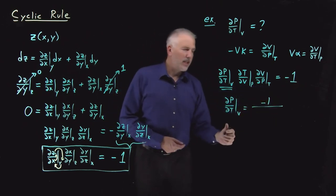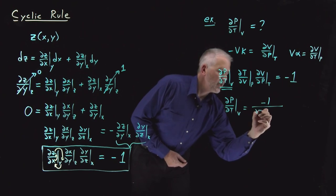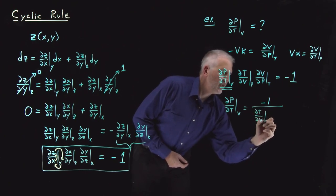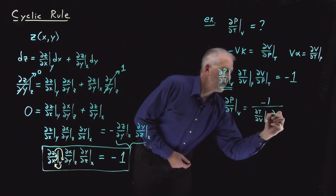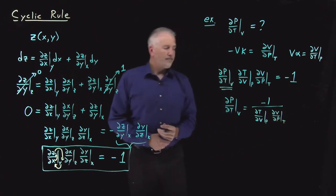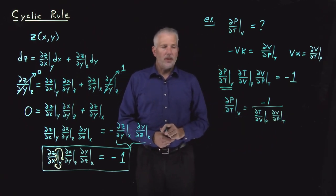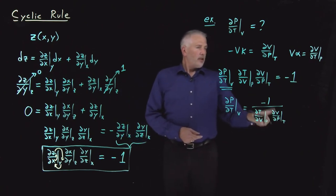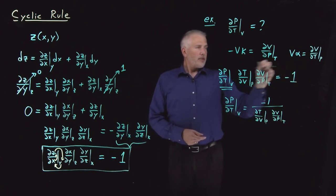When I bring them over to the right side, they end up in the denominator, ∂T/∂V constant p, and a ∂V/∂p at constant T, both in the denominator.